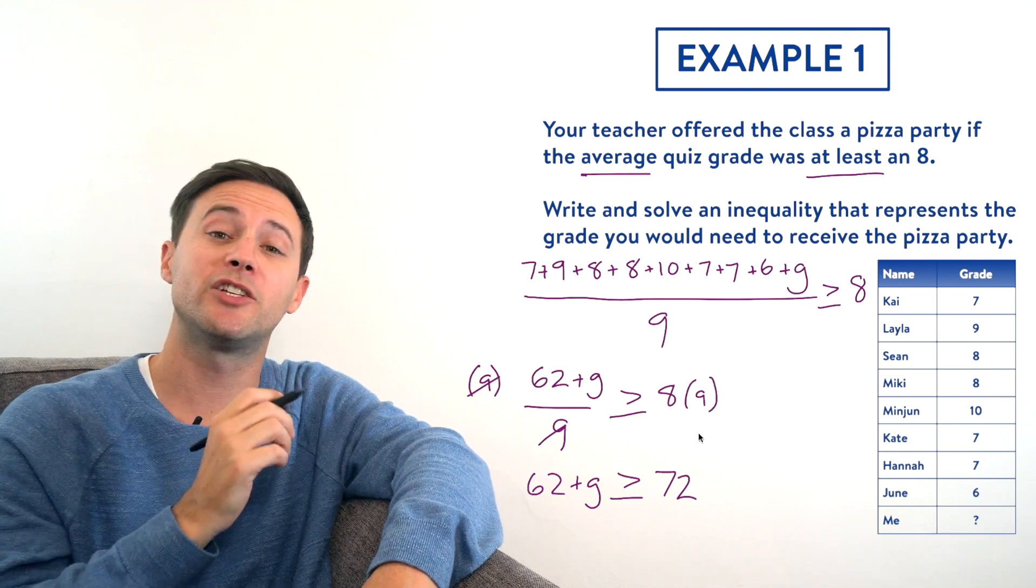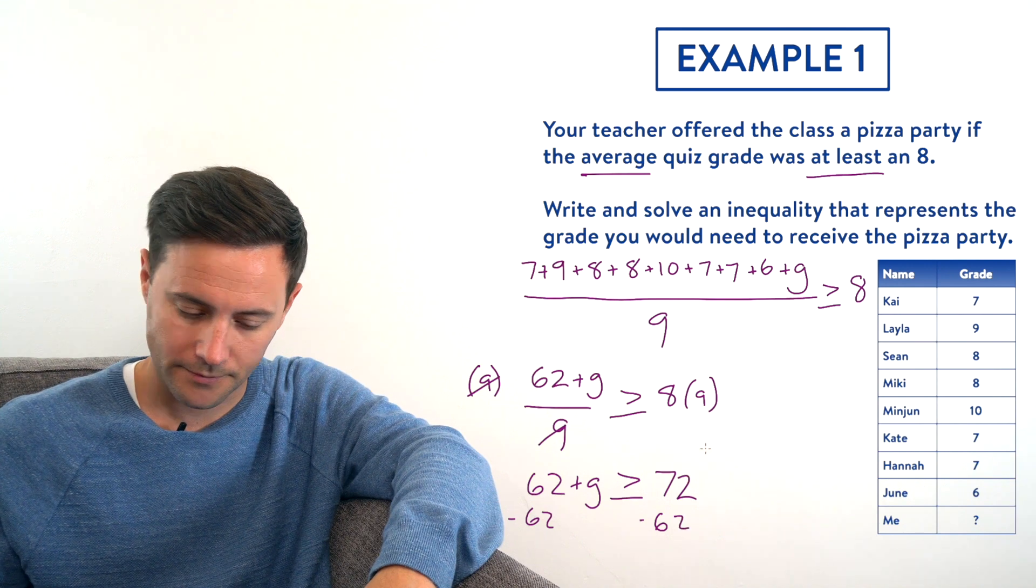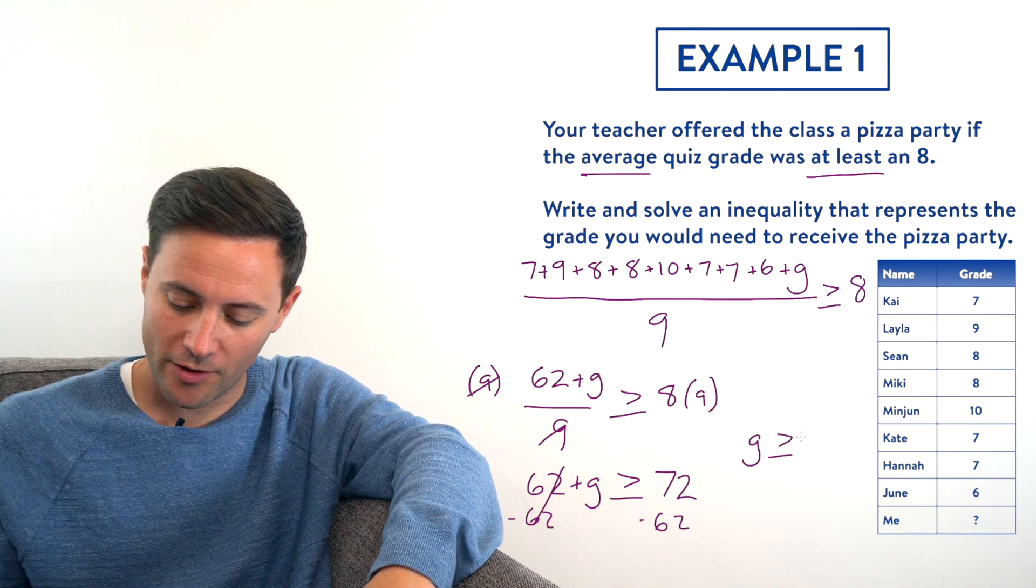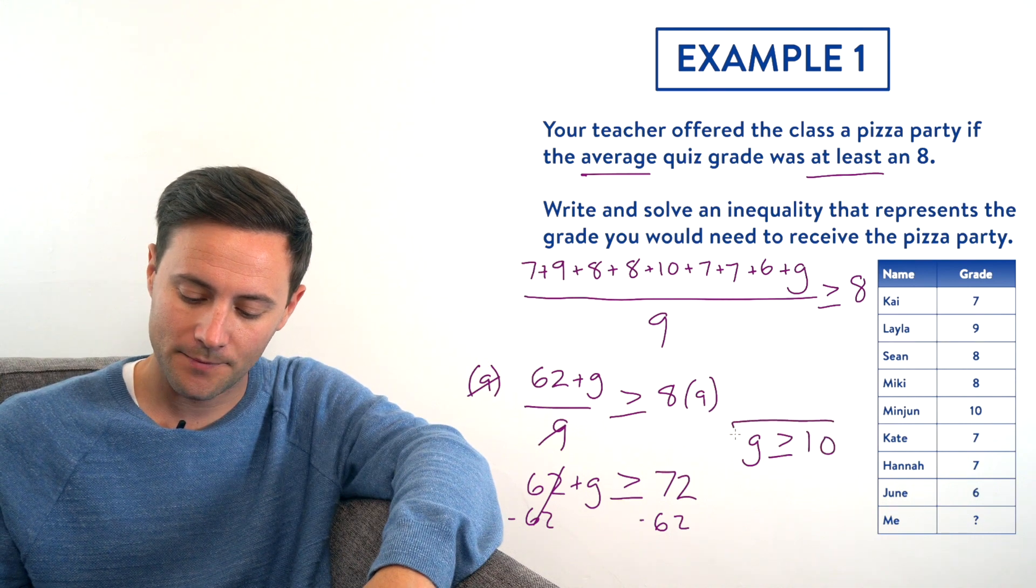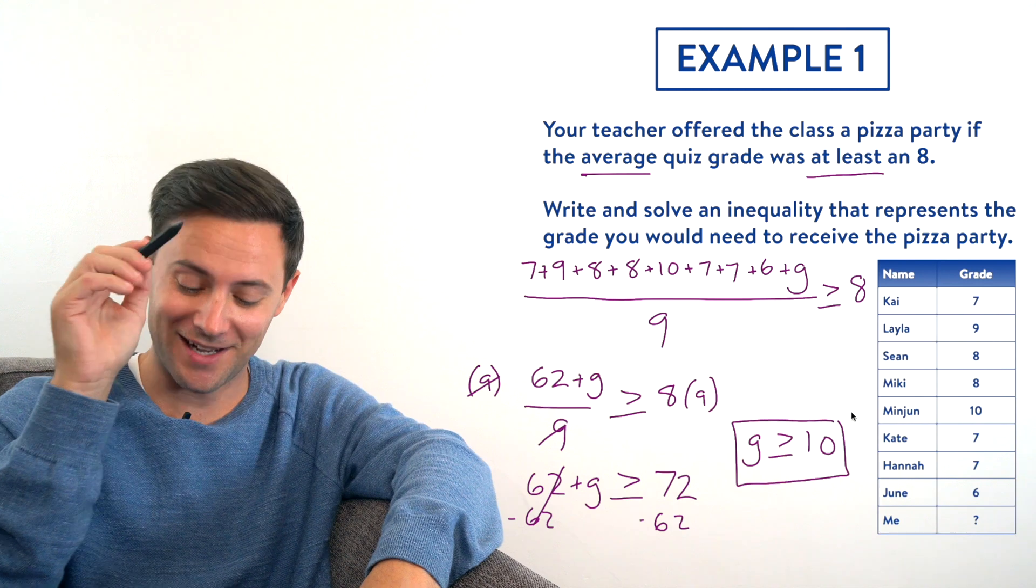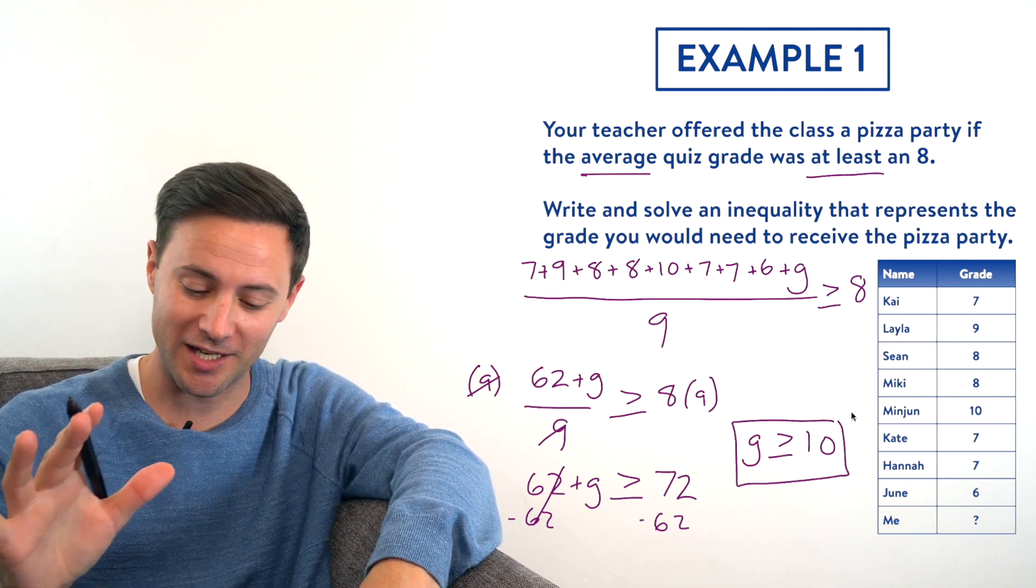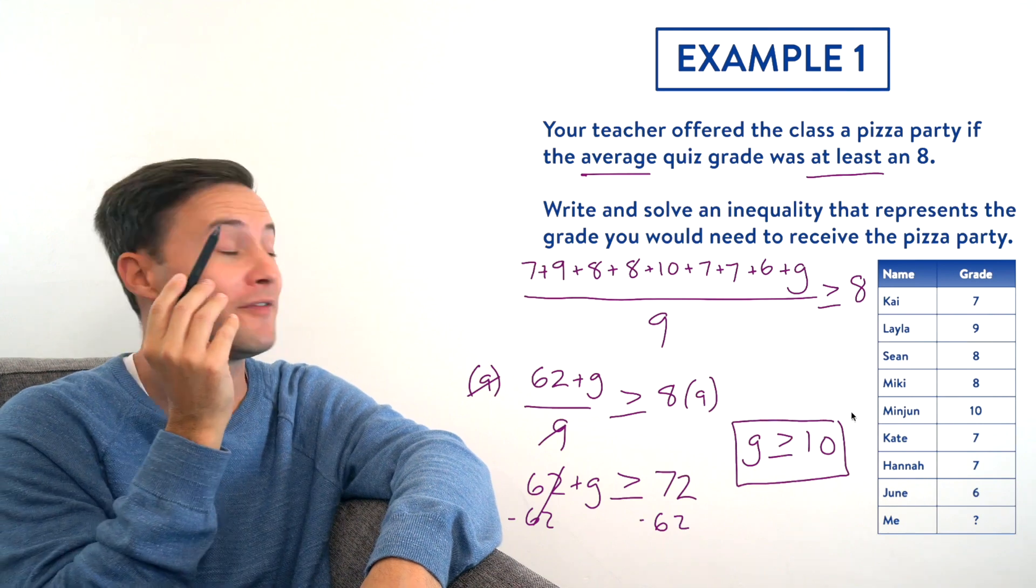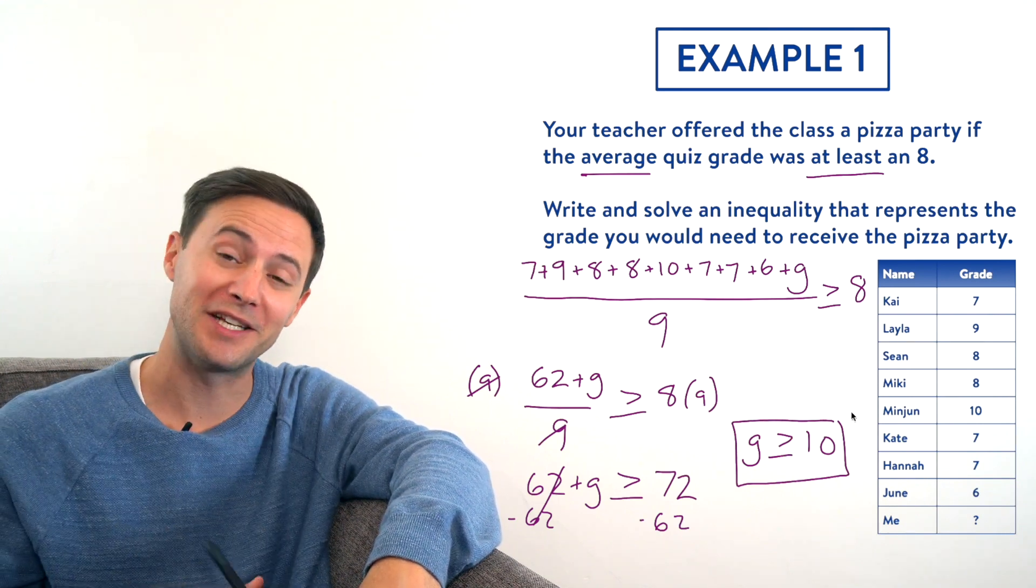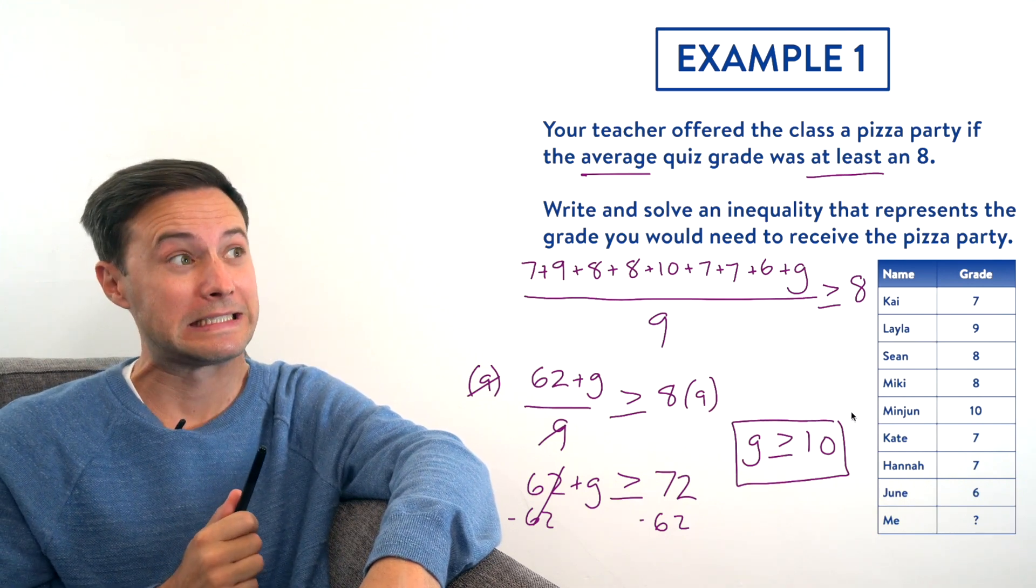Now to get G alone, I just need to subtract 62 from both sides, and I am left with G is greater than or equal to 10. I wrote the inequality, I've solved it, and now we can answer the question. I need a grade of at least a 10 on the quiz for my class to receive a pizza party, which means the pressure's on. Yikes.